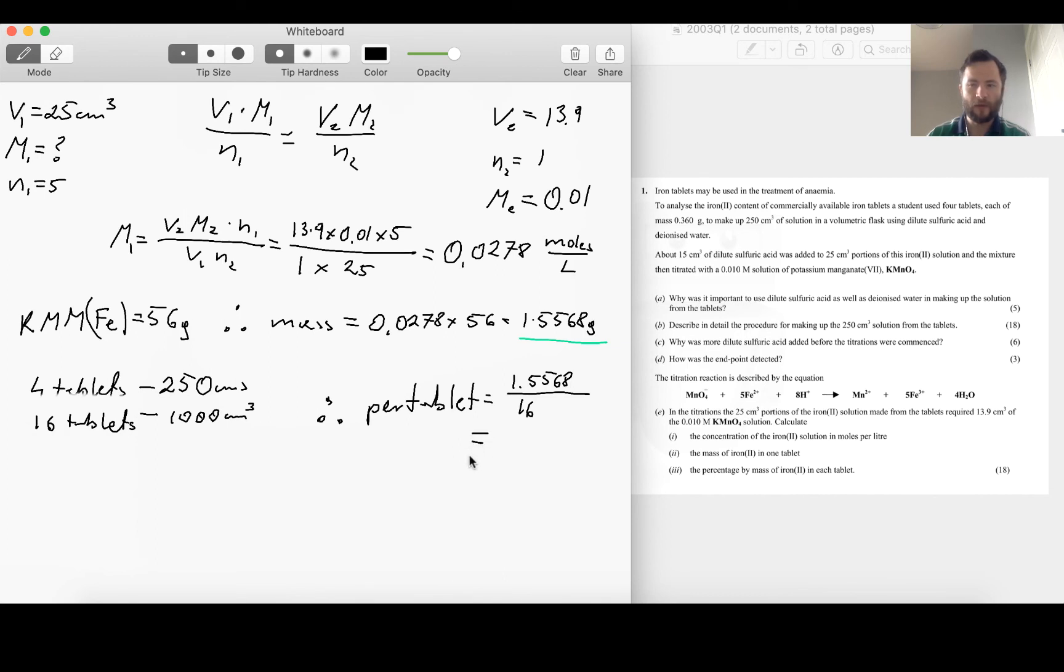And that is equal to 0.0973 grams of iron per tablet. So now I know that I am using 0.0973 grams of iron per tablet and I know that mass of tablet is equal to 0.36 grams.